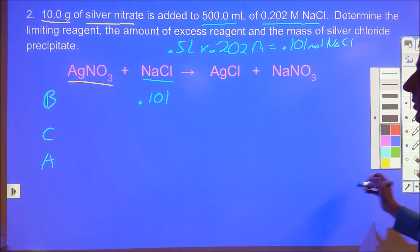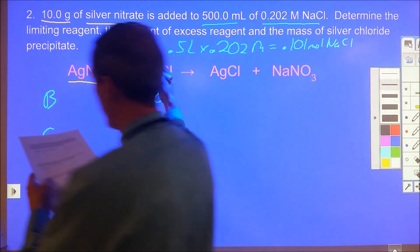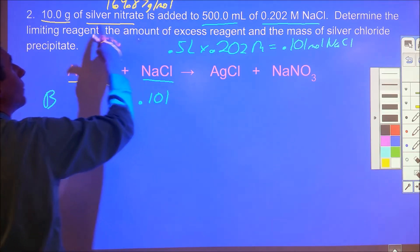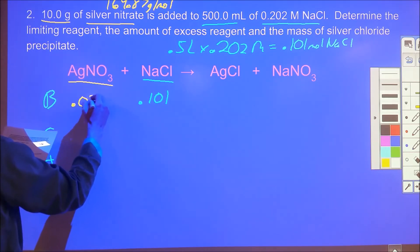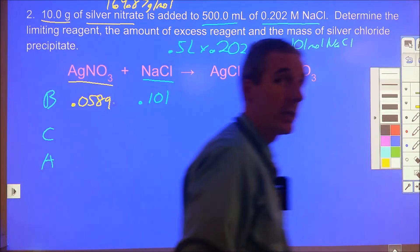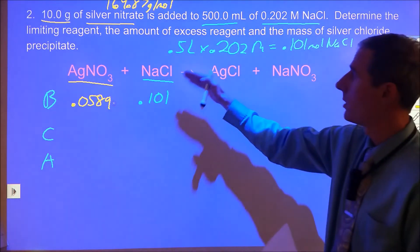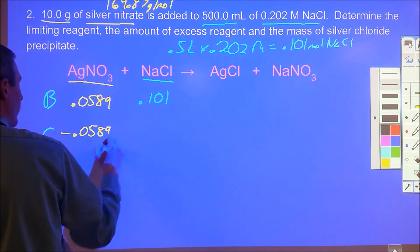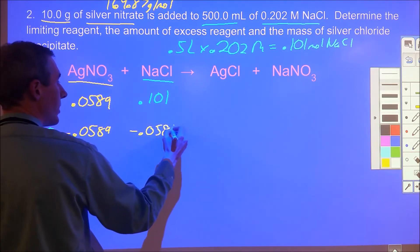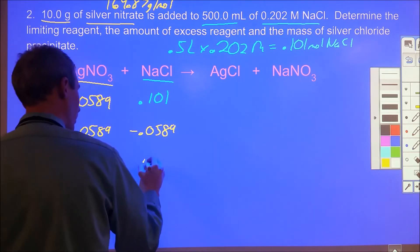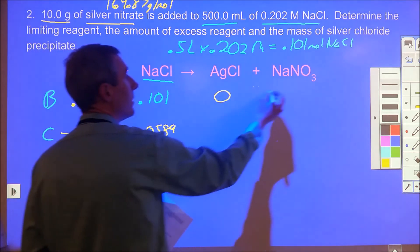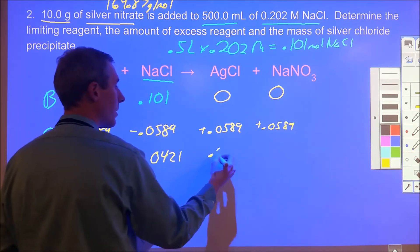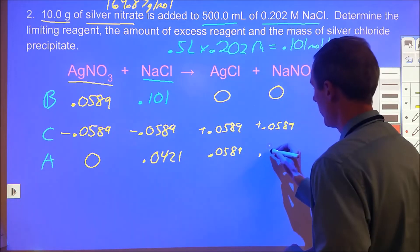Silver nitrate: 10 grams divided by the molar mass of 169.87 grams per mole gives us 0.0589 moles. Now we can do our typical BCA analysis. Everything is a one-to-one ratio, so since we have the least amount of silver nitrate, that's going to be our limiting reagent and it'll react to completion. This will decrease by the same amount but we'll have some left over.